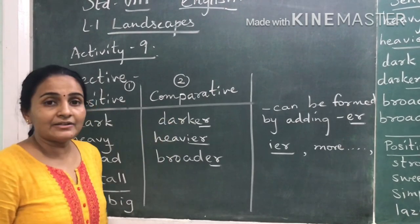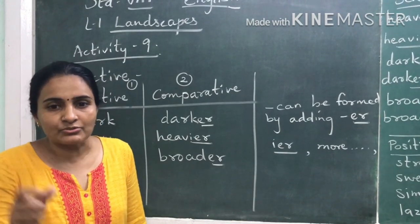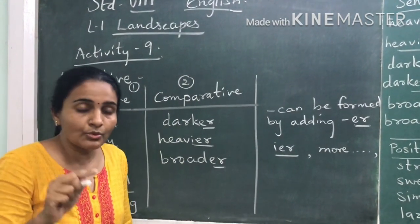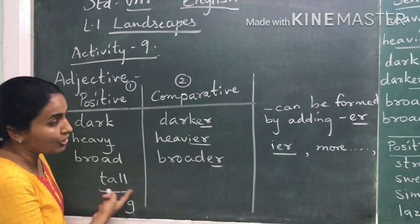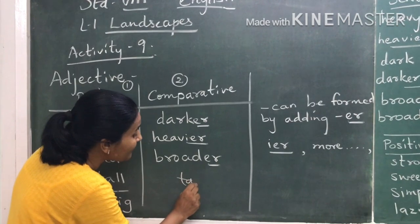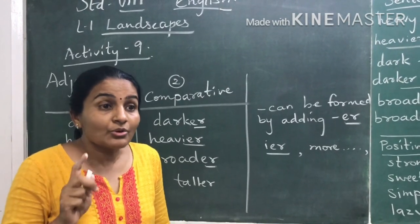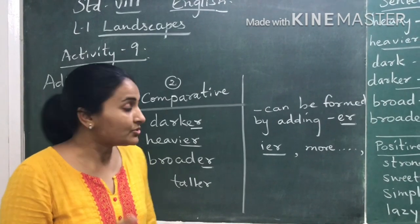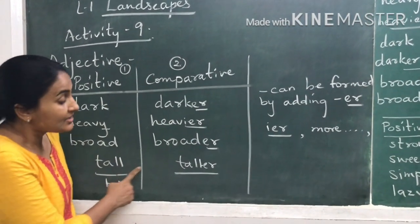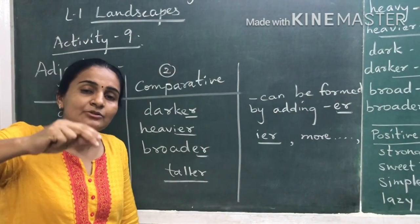Now for comparative degree — comparison always involves two things. When you compare one thing with another, you use comparative degree. For example, 'Ram is taller than Rahul.' Here I am comparing two boys, Ram and Rahul. Now I cannot use 'tall'; I have to use 'taller' to show one is taller than the other. That is the comparative degree.